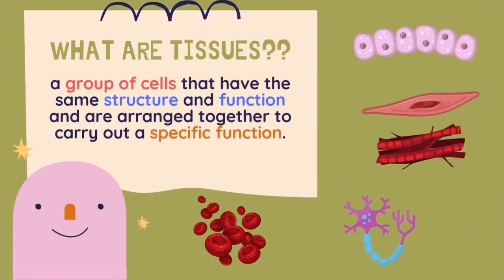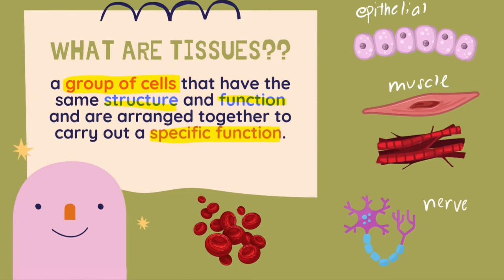What exactly are tissues? Well, tissues are a group of cells that have the same structure and function, and are arranged together to carry out specific functions. Today I will be teaching about four different types of tissues, which are epithelial tissues, muscle tissues, nerve tissues, and connective tissues.